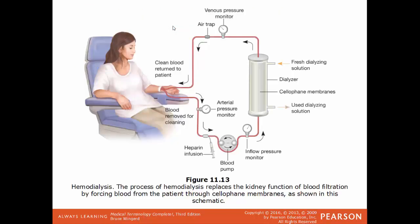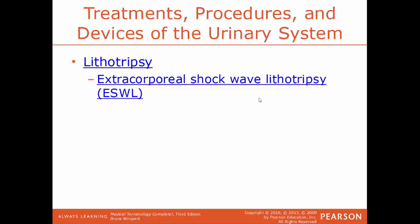Here's an example of hemodialysis: the patient's blood is taken out, put through filters, and then put back into the body. Any toxins or waste products are removed before the blood is put back in the patient. Lithotripsy is a process used to crush and destroy stones, such as kidney stones.